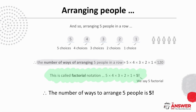We can write this product using factorial notation, and we say five factorial. So the number of ways to arrange five people is five factorial.